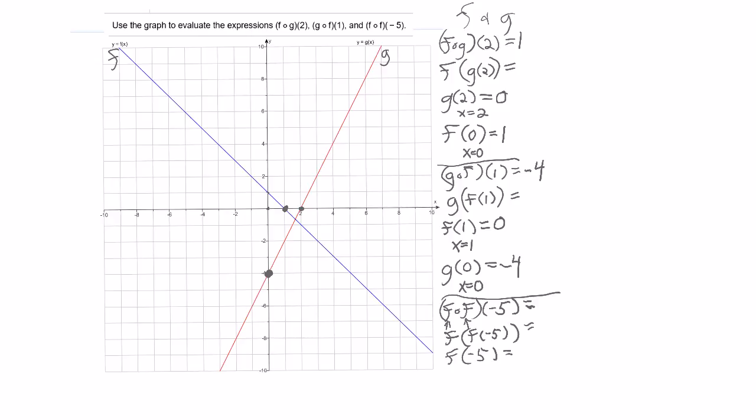I go to x equals negative 5, which is here. And then the blue line is f, so I go up to that point there, which is where x equals negative 5 for this graph, and the y-coordinate is 6. So I see that f of negative 5 is 6.